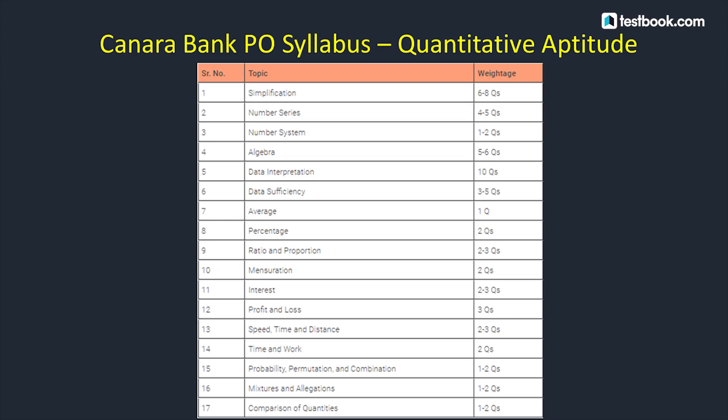For Quantitative Aptitude, topics include Simplification using BODMAS rule, Approximation, Decimals, Fractions, Surds and Indices, and Percentage. From Number Series, there will be 4-5 questions covering Divisibility, Remainder, LCM, HCF, and Missing Terms.